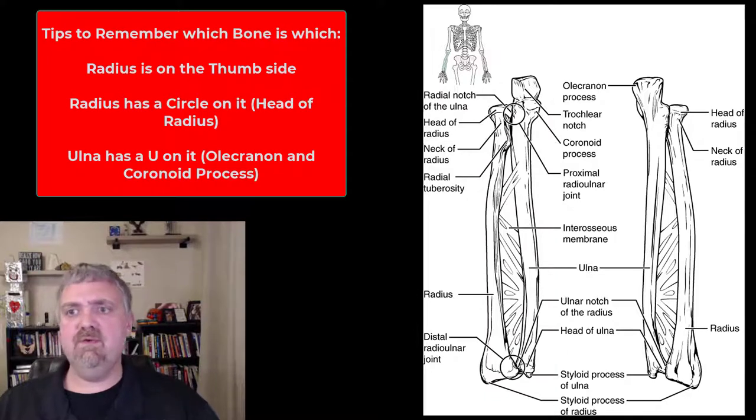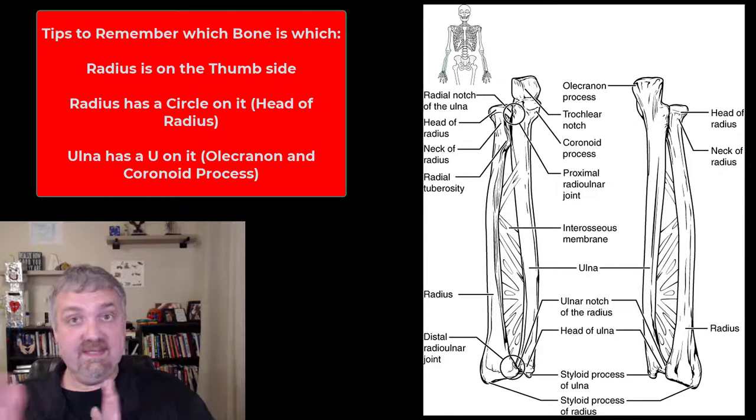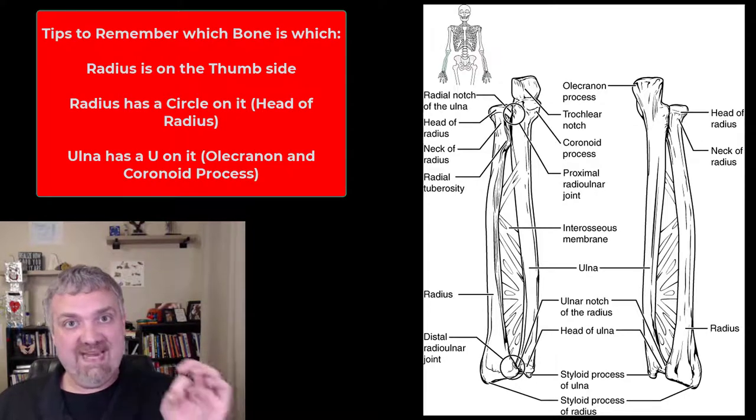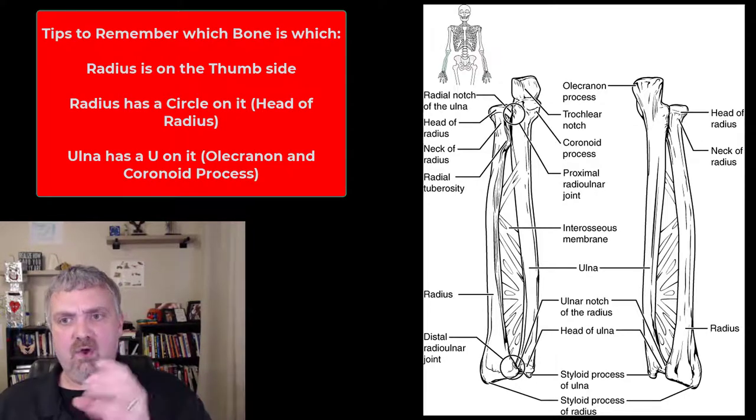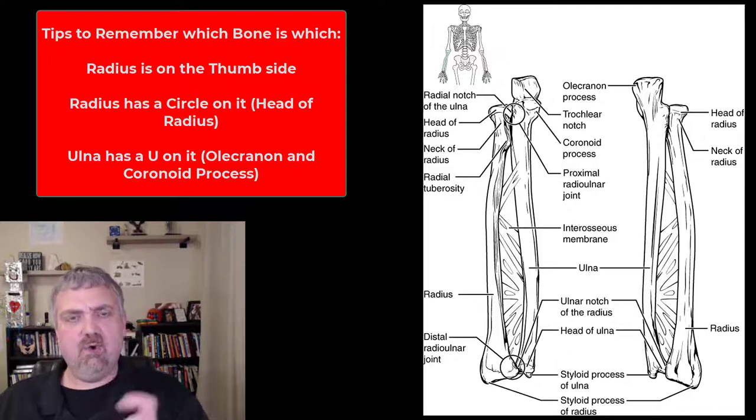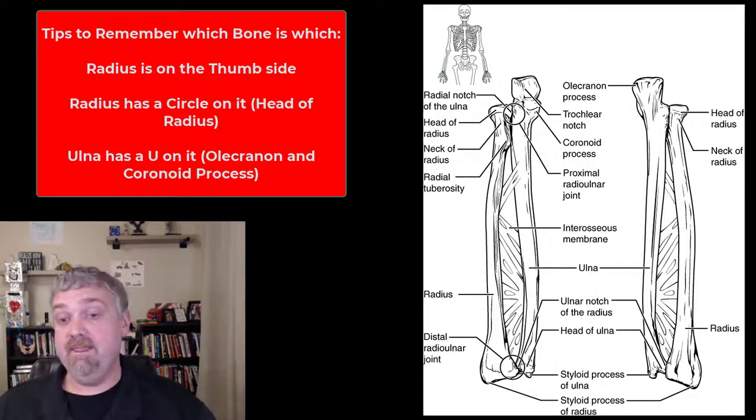When I'm holding these two bones, here's the key to remember them. The head of the radius is a circle, right? The radius is half the diameter of a circle. So the radius has a circle on it, and the ulna, you can't see it very well here, but that trochlear notch is shaped like a U. So if you're holding these two bones, the ulna has a U on it, the radius has a circle on it. That's how I remember them.